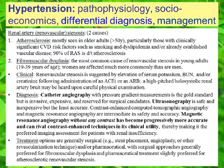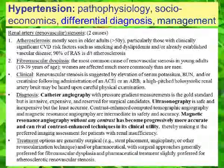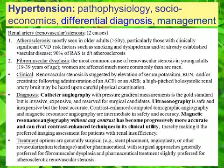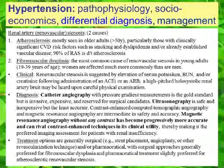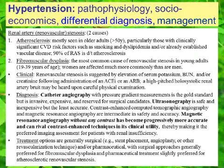The gold standard for diagnosis is catheter angiography. Ultrasonography can also be used, even though it is less sensitive. Magnetic resonance angiography without contrast has become progressively more accurate and can rival contrast-enhanced techniques, and this would be the assessment of choice because it does not include a nephrotoxic contrast agent.